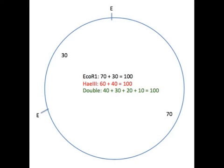There is another solution to this problem that makes only one cut in the larger 70 kilobase fragment and a second cut in the smaller 30 kilobase EcoRI fragment. See if you can figure it out.